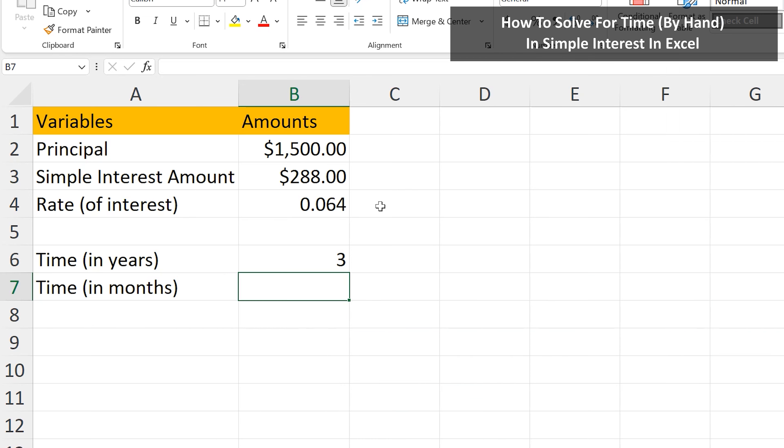One note for if you need the time and the number of months. Here in cell C6, I have a similar problem set up. I'll hit the enter key, and we get 2.5 as the number of years.